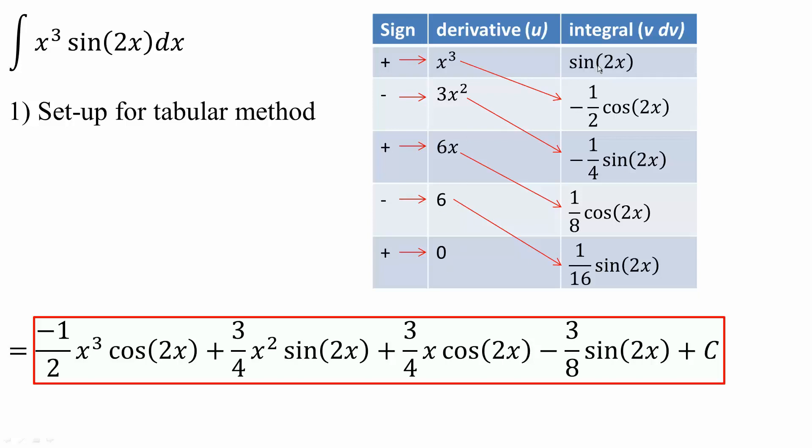Next, we take the integral of sine 2x, which is going to be negative 1 half cosine 2x. The integral of this term will be negative 1 fourth sine 2x. The integral of this term will be 1 over 8 cosine 2x. And finally, the integral of this piece will be 1 over 16 sine 2x.